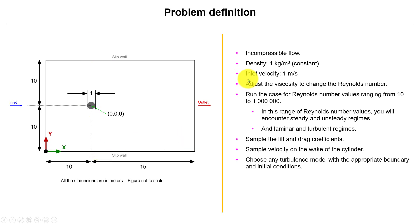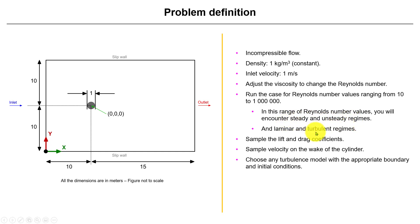Here we also have the flow properties. We're going to work incompressible and we're going to use Reynolds similarity. What we're going to do is fix density and the inlet velocity to one, and then adjust viscosity to get your Reynolds number. You are free to choose any Reynolds number. Also sample lift and drag coefficients, sample velocity in the wake of the cylinder, and choose a turbulence model with appropriate boundary and initial conditions.